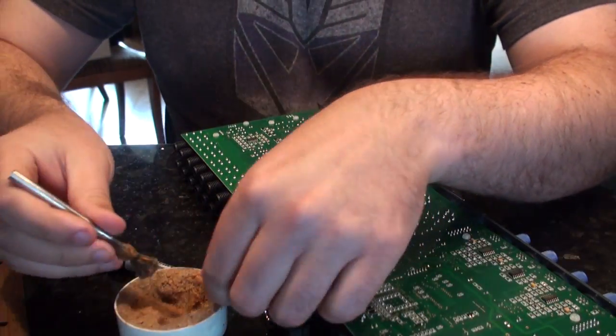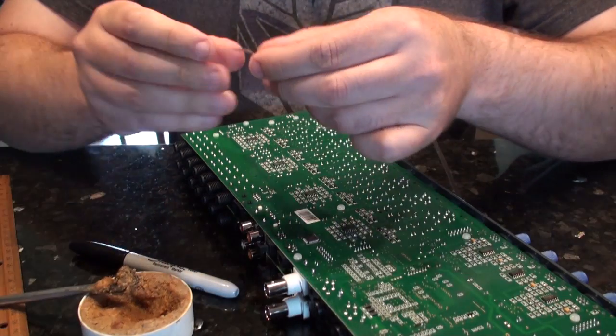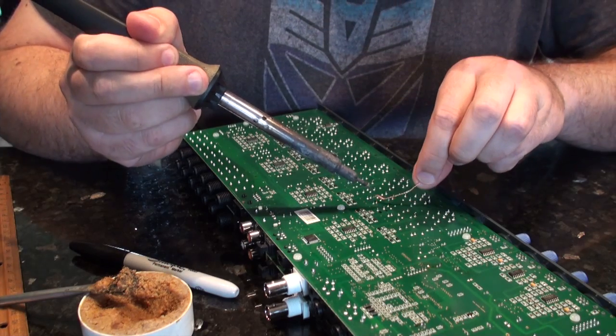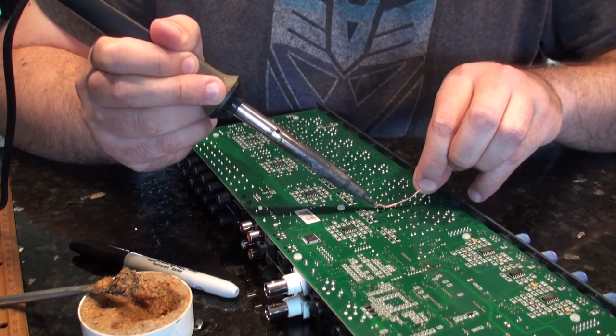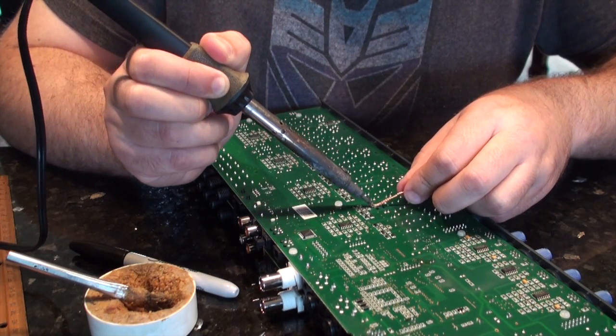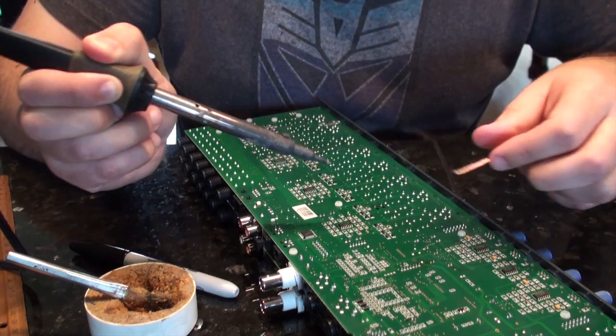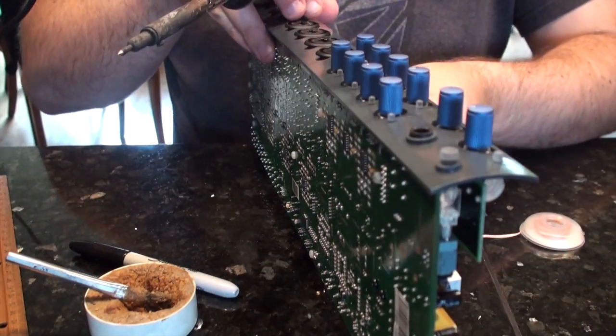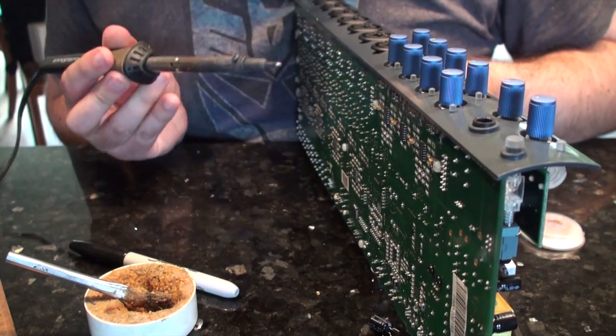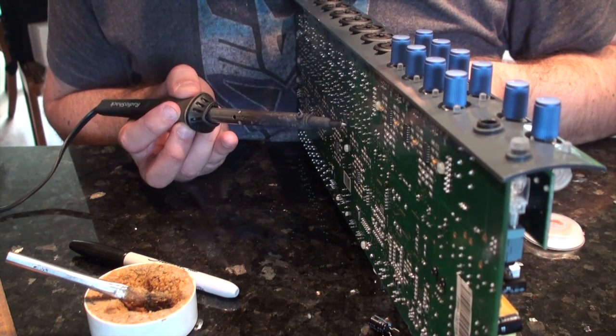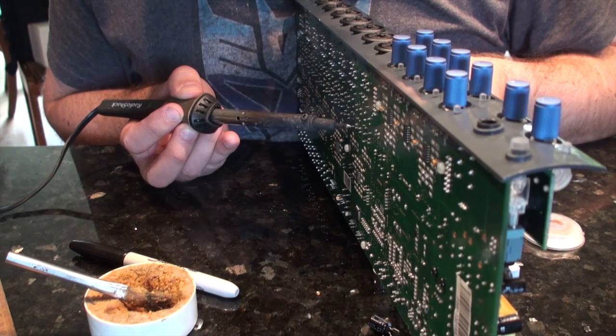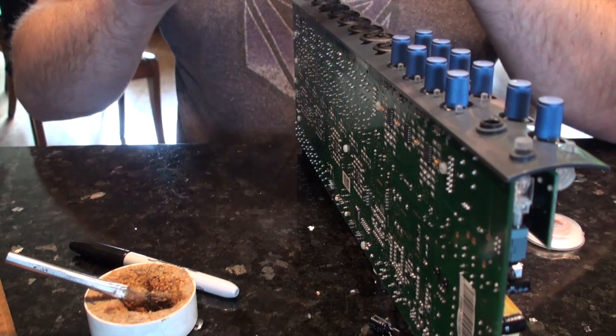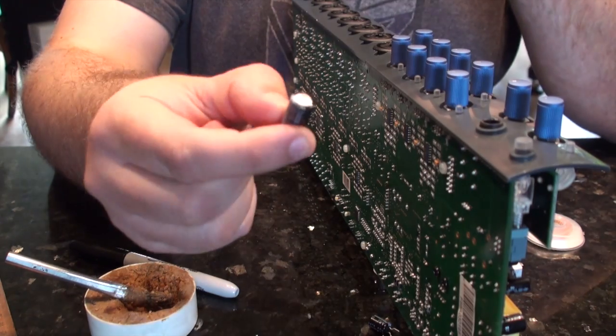Get some flux on it, wind it out, and soak it up. Okay, so we might be able to start wiggling this thing free. Here it comes, it's trying to come out. And there we have the bad capacitor.